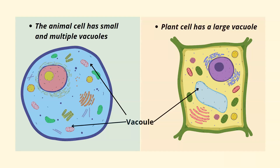Although we see vacuoles both in plant cells and animal cells, there is a striking difference in their sizes. We see smaller and multiple vacuoles in animal cells, but we see large vacuoles in a plant cell.